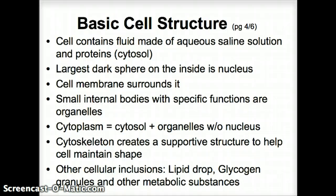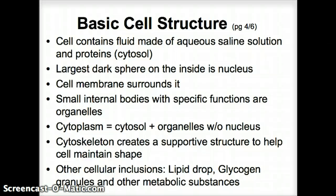Structurally speaking, the inside of the cell has a fluid in it — an aqueous saline solution with some proteins. Aqueous means water, saline means salty. We call that the cytosol. Then we have a large sphere, most often quite in the center, and that is the nucleus. A cell membrane surrounds both the nucleus and the cell itself. Besides those two main structures, we have smaller structures called organelles — little organs — with very specific functions depending on what they need to do.